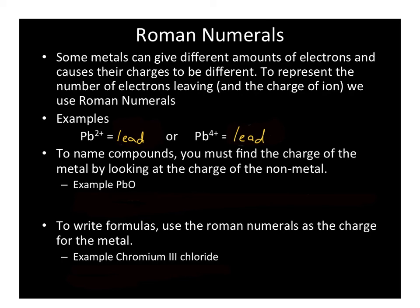To differentiate variable charges in transition metals, we use Roman numerals. I'm only asking you to use I, II, III, and IV. For lead giving off two electrons, we use Roman numeral II; for lead giving off four electrons, we use Roman numeral IV.